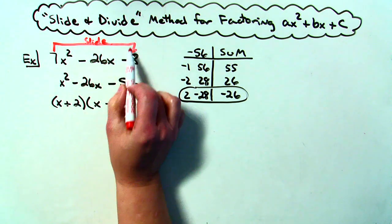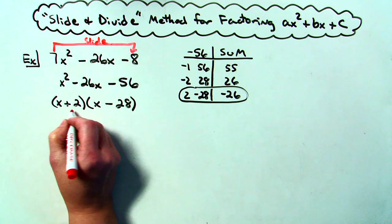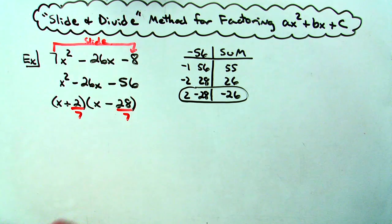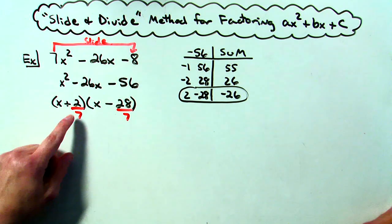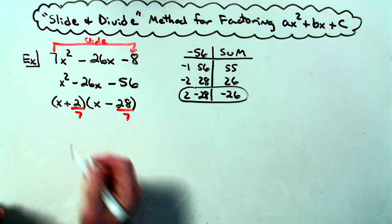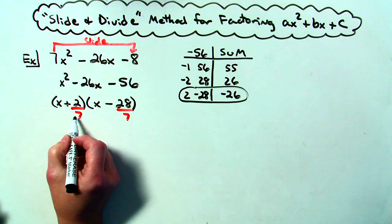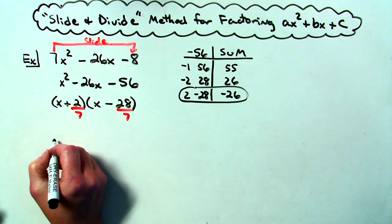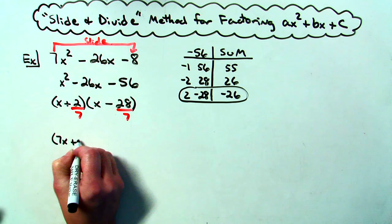Once I slide that 7 over then at the end I have to divide by 7 and divide by 7. Now on this one right here it does not divide out evenly. I can't take 2 divided by 7. So what I'm going to do is I'm just going to pull that 7 out in front and make this binomial a 7x plus 2.